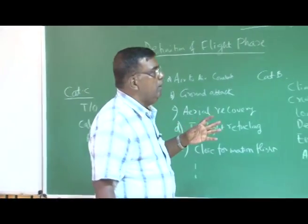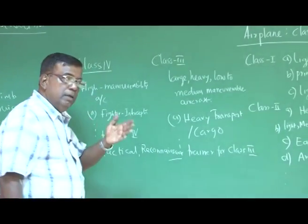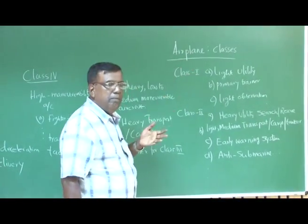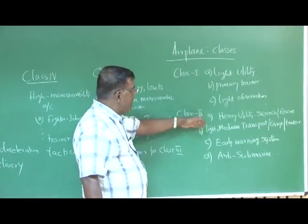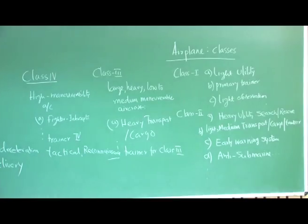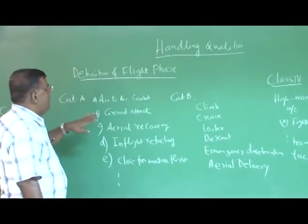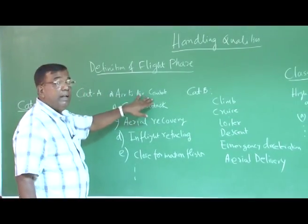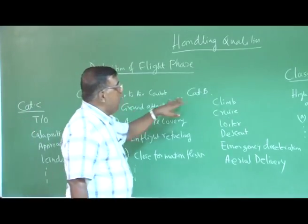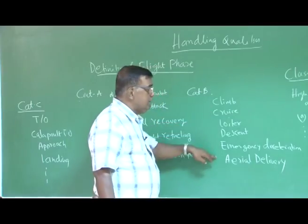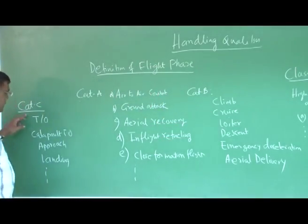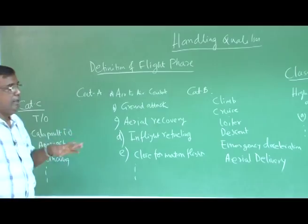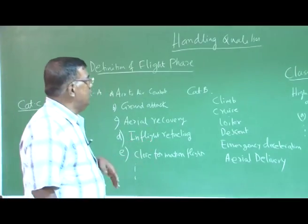So what we have seen is how the guidelines have been structured. First, look for the airplane classes and which class the airplane belongs to by looking at its attributes. Then check the flight phases — whether it belongs to category A (air-to-air combat), category B (cruise, climb, loiter), or category C (takeoff, catapult, approach, landing). So we have classes and we have categories. Now we talk about levels.